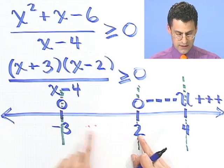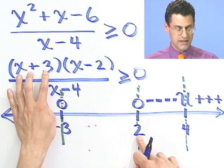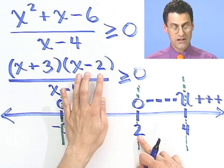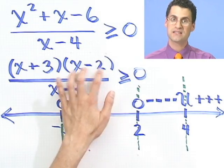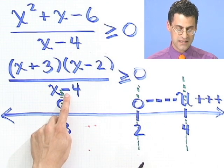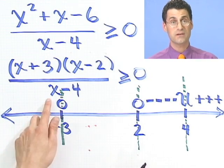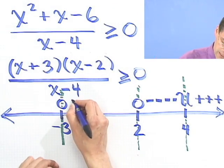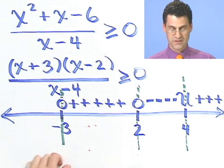Now I need something between negative 3 and 2. How about 0? So let's plug in 0. Here I see 3, that's positive. Here I see negative 2. So that's negative. So positive times a negative is a negative on top. And if I plug in 0 on the bottom, I see minus 4. So I see a negative divided by a negative. Negative divided by negative is positive. So in fact, here, it does switch back to positive. So I see a positive here.